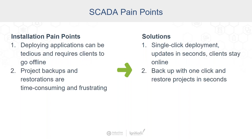One pain point that's stuck around for years is that deploying applications can be tedious and requires clients to go offline. Another is that project backups and restorations are time-consuming and frustrating. Ignition has a single-click deployment from the designer. It updates in seconds, and clients stay online the entire time. Plus, you can backup projects with one click and restore in seconds.